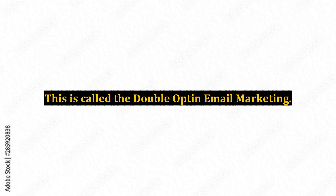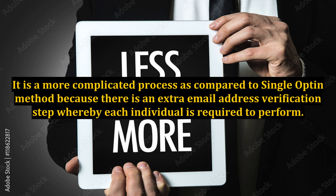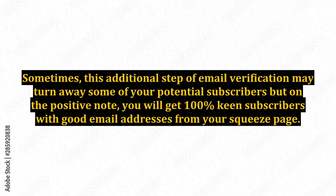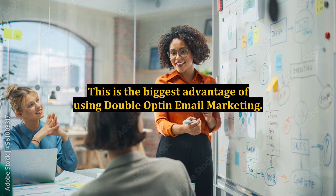This is called double opt-in email marketing. It is a more complicated process as compared to the single opt-in method because there is an extra email address verification step which each individual is required to perform. He or she will be requested to confirm their email address by clicking on a link contained in an email sent out immediately by your autoresponder after completing the sign-up process at your squeeze page. Sometimes this additional step may turn away some potential subscribers, but on the positive note, you will get 100% keen subscribers with good email addresses. This is the biggest advantage of using double opt-in email marketing.